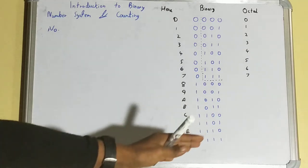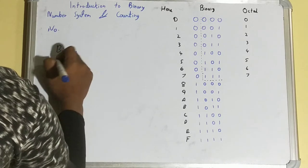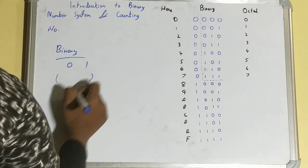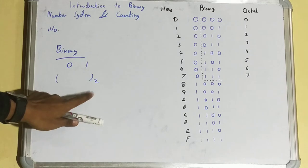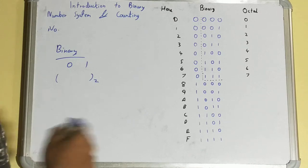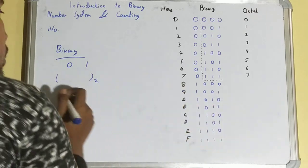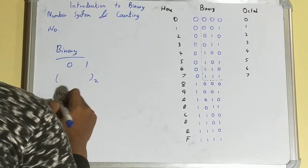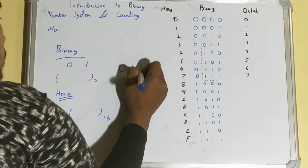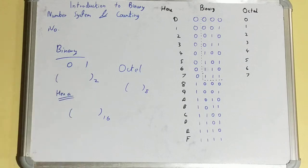The binary number has two digits: zero and one. That's why when representing a binary number, we always use base 2. Hexadecimal has 16 numbers, so we give it base 16. For octal, we give base 8 because it has eight numbers. This is how we represent different number systems.